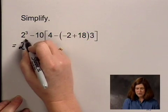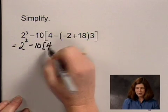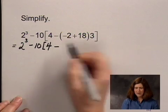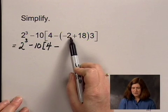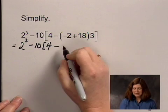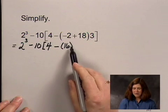So we have 2 cubed minus 10 times the quantity 4 minus. Now I'm going to simplify the negative 2 plus the 18, and that gives me 16. Now this is times 3.